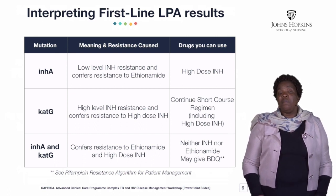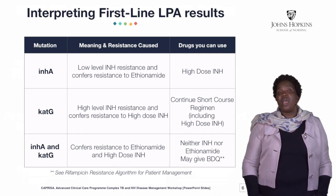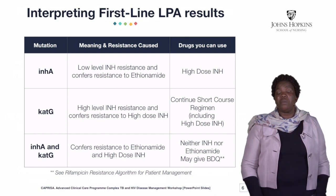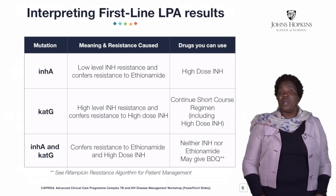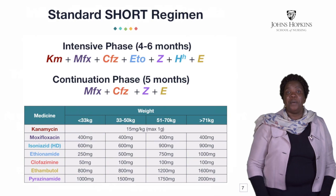If the patient is showing both inhA and katG mutations, that is the patient who is going to be channeled for a bedaquiline regimen, which is what I am talking about right now.